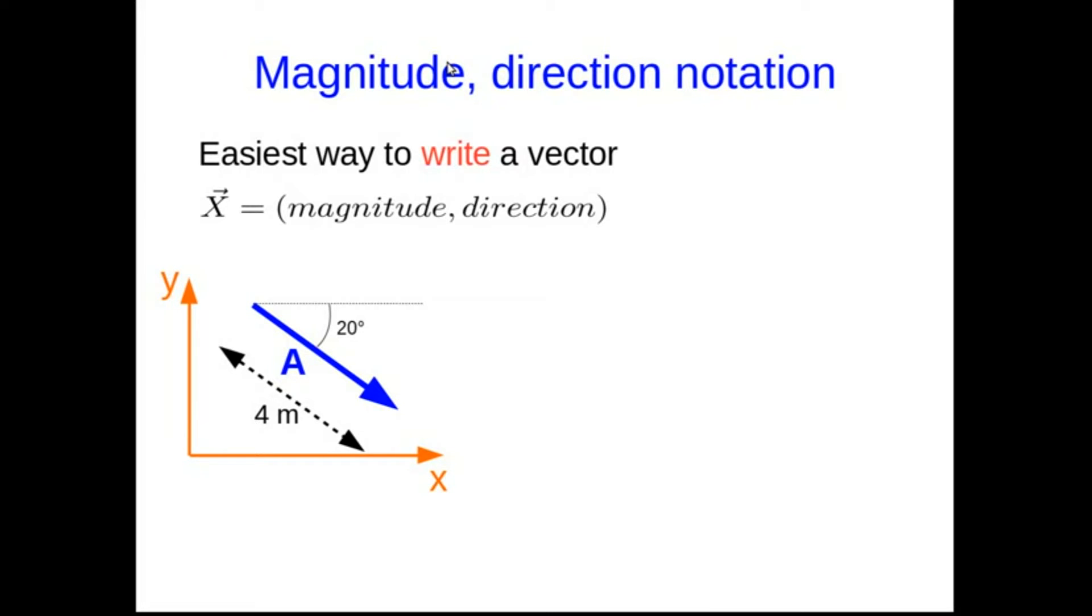So the way I've been writing these vectors so far is what's called magnitude direction notation, where you first write the magnitude and then you write the direction. And usually we enclose them in parentheses.